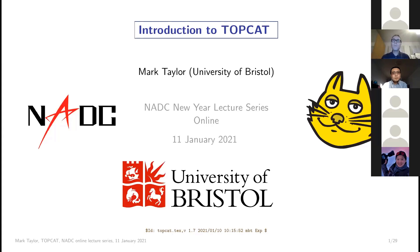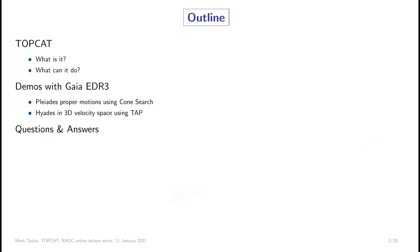Thank you very much for the opportunity to talk. I've put the URL for the slides into the Zoom chat if you'd like to download them or follow along. I'll start by explaining what TOPCAT is and what it can do, and then the second half of the talk will be demonstrations, showing how you can come up with some actually interesting scientific results. I'll be using data from the Gaia astrometry satellite, and then there'll be some time for questions at the end.